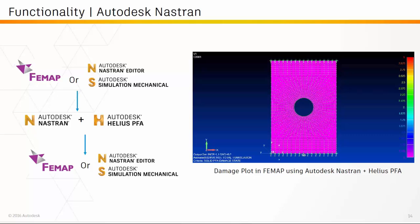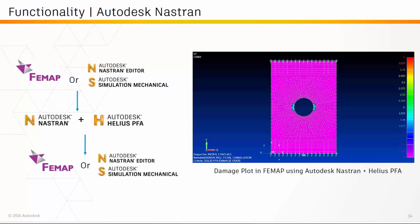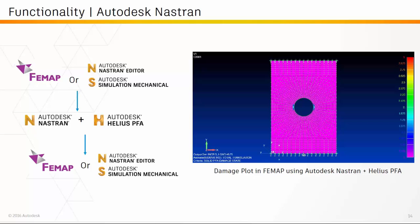The workflows for including Helios PFA with Nastran are shown on screen. You can export a model with Femap, add the new cards to the Nastran deck, run it in the Nastran solver, and then post-process in Femap. Similarly, you can do that with Autodesk workflows such as the Nastran editor. On the right-hand side of the screen, we are showing a damage plot of a continuous fiber composite laminate, and as loading increases, you can see damage spreading from the hole edge, with ultimate failure propagating from the hole edge as well.